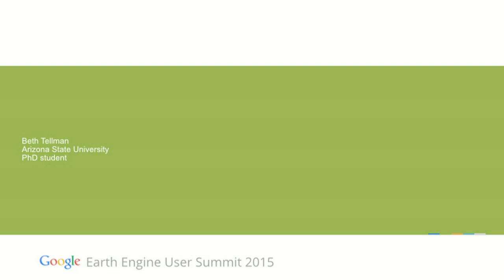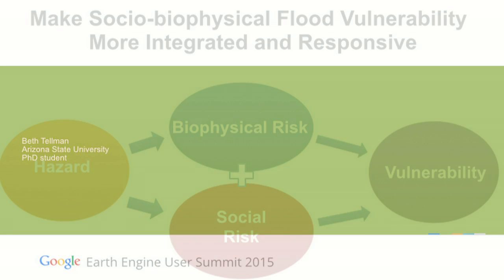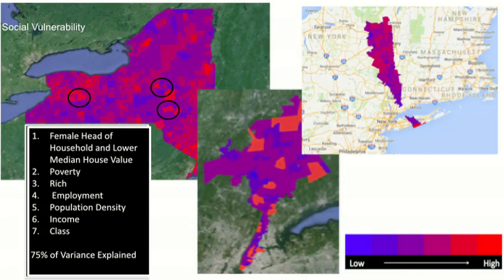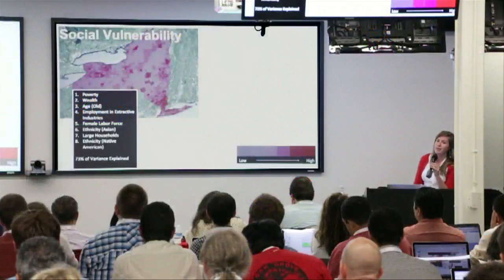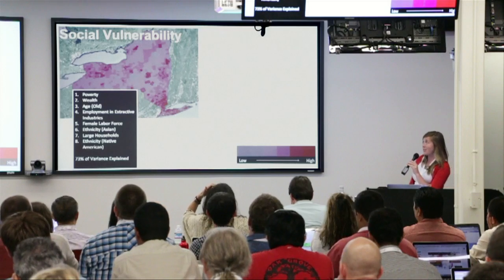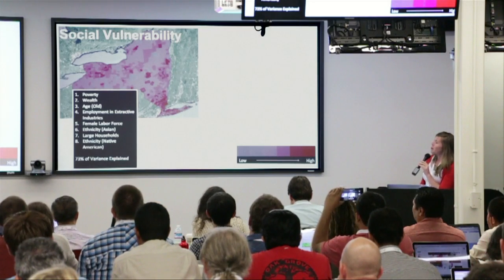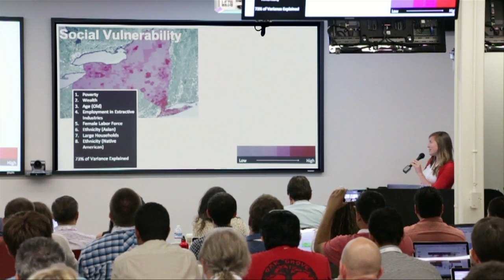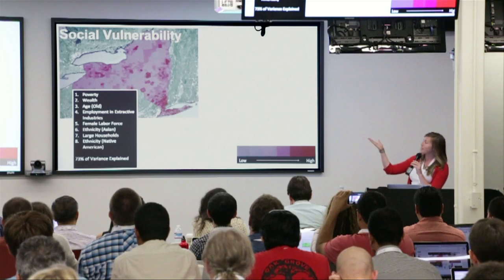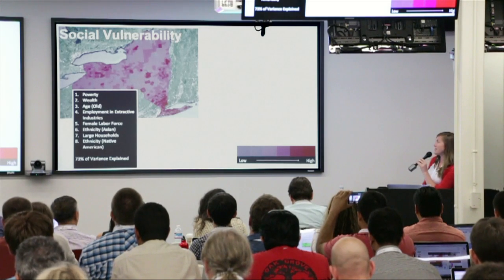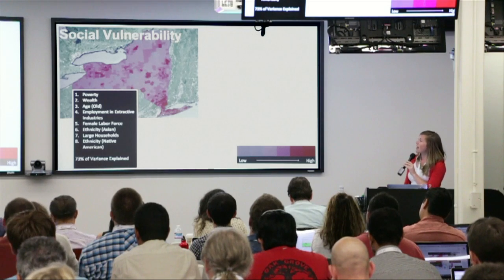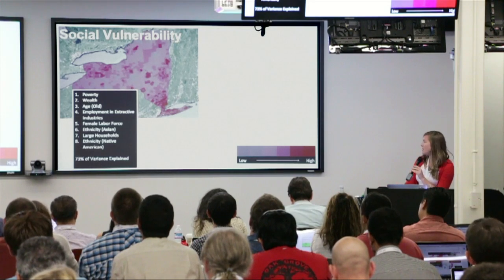We think Earth Engine is a great tool to understand how transformations can affect flood vulnerability. The way we're doing this on the social side is to adapt methods developed by Susan Cutter at the University of South Carolina, which runs a principal component analysis on U.S. Census data. What you're seeing here is a map of social vulnerability for the state of New York, run on census tract data, and a list of the variables that influence vulnerability in that region.